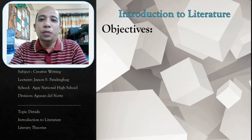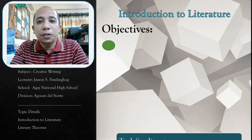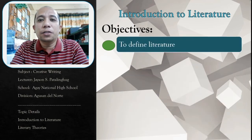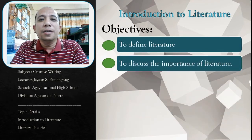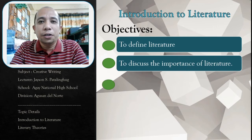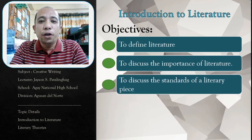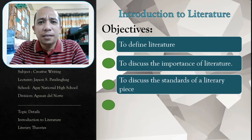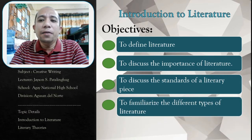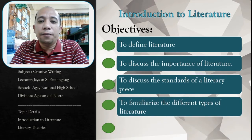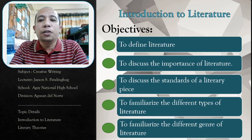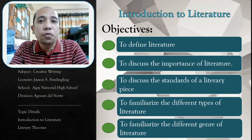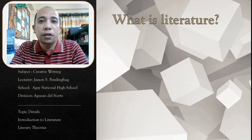The objectives of our discussion today are: first, to define literature; second, to discuss the importance of literature; third, to discuss the standards of a literary piece; fourth, to familiarize the different types of literature; and fifth, to familiarize the different genres of literature.